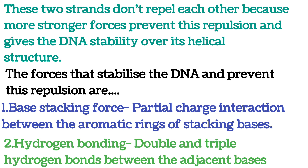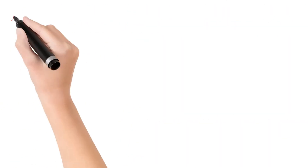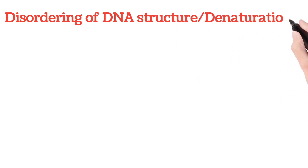The second major interaction is hydrogen bonding. Adjacent nitrogenous bases are held together by hydrogen bonds: adenine on one strand pairs with thymine on the other strand, and cytosine on one strand pairs with guanine on the other strand with three hydrogen bonds. This is a horizontal interaction. Due to these two major forces and some other weak interactions, DNA is stabilized. Now we'll see how DNA structure is denatured.